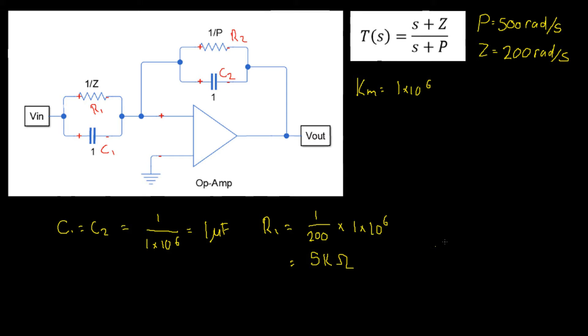Lastly, we can find our resistor R2 which can be given by 1 over P where P is our pole position and is 500 radians per second. Remember we then scale it up by our scaling factor which is 1 times 10 to the power of 6 which gives us 2 kilo ohms.